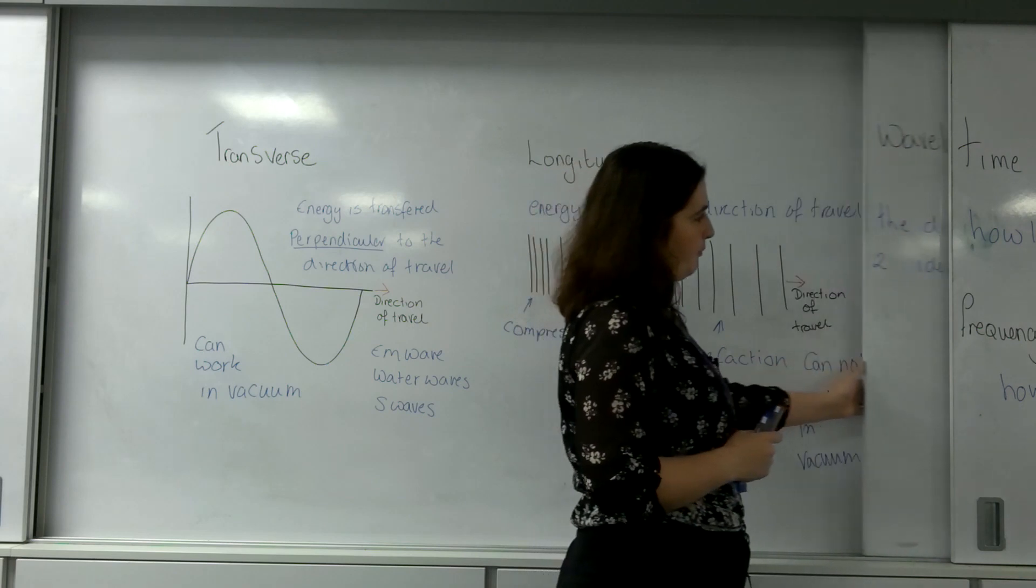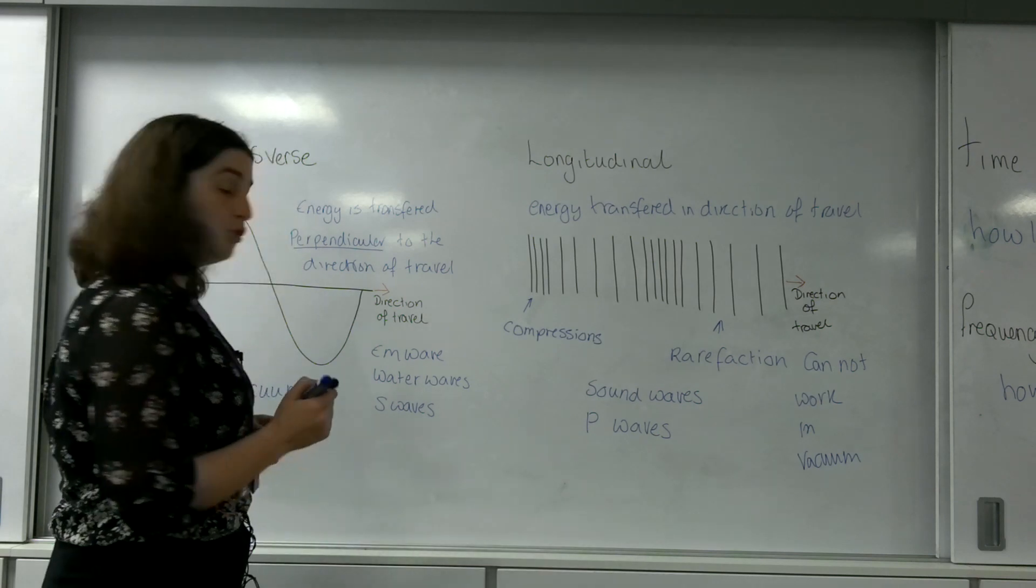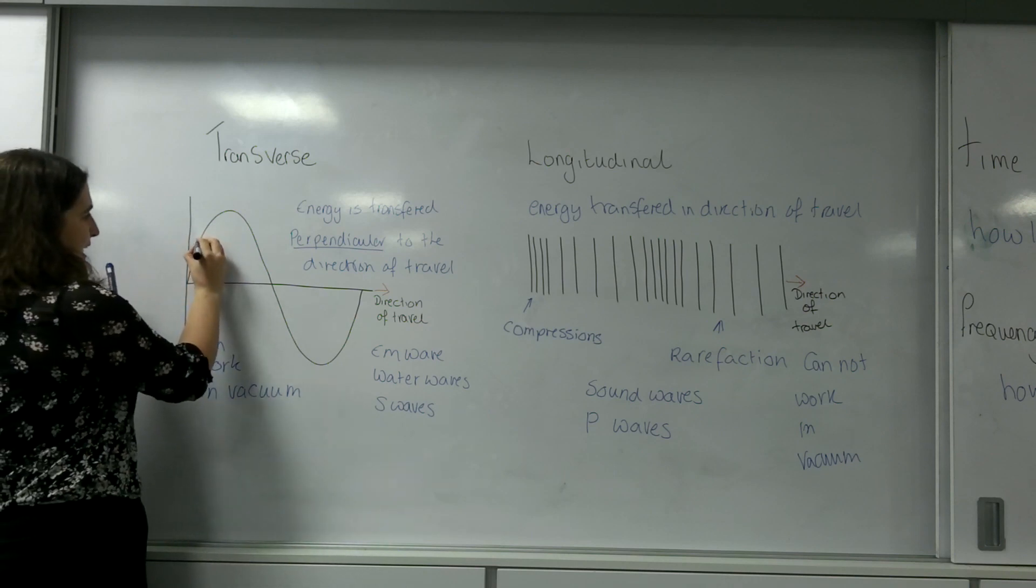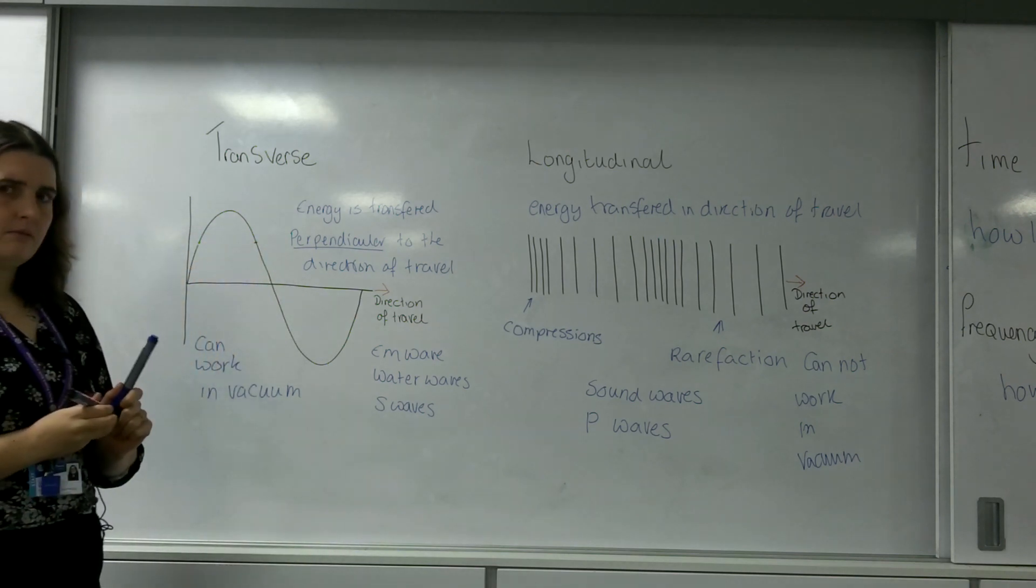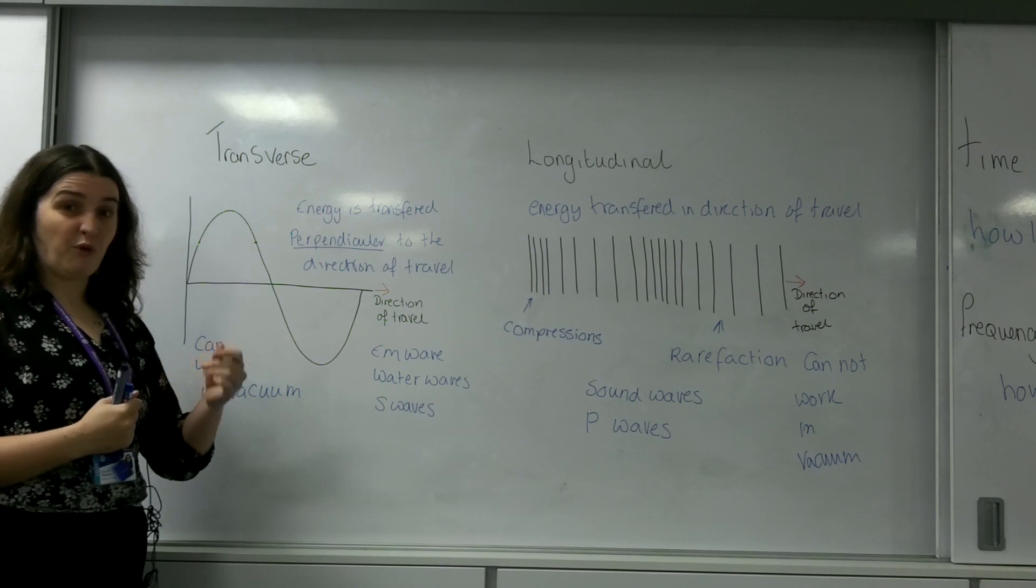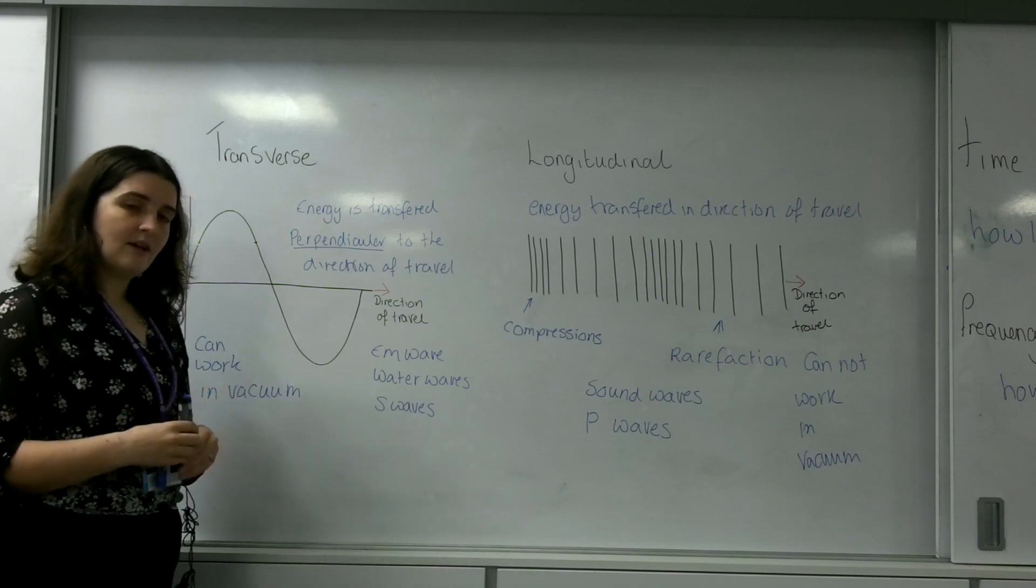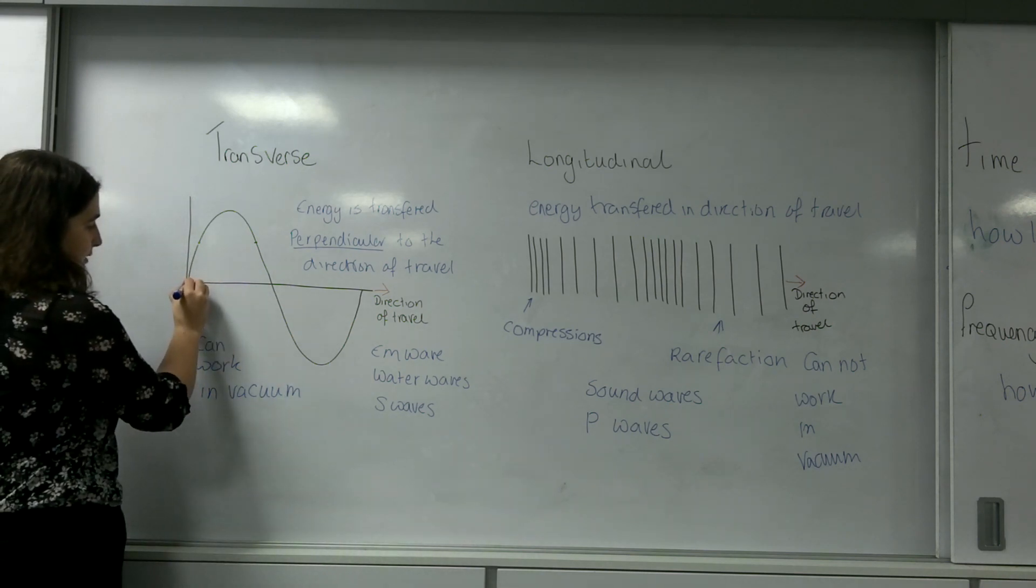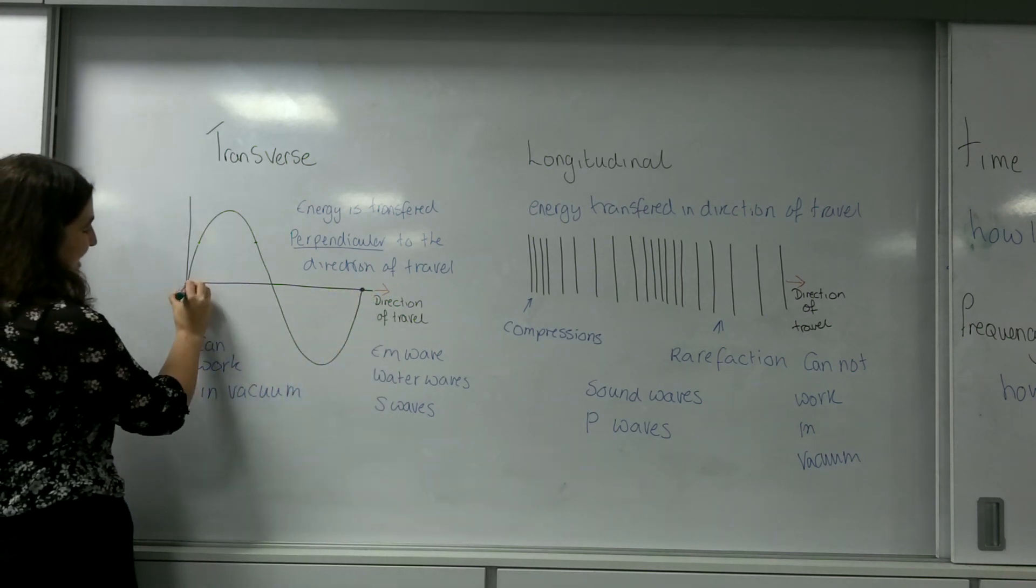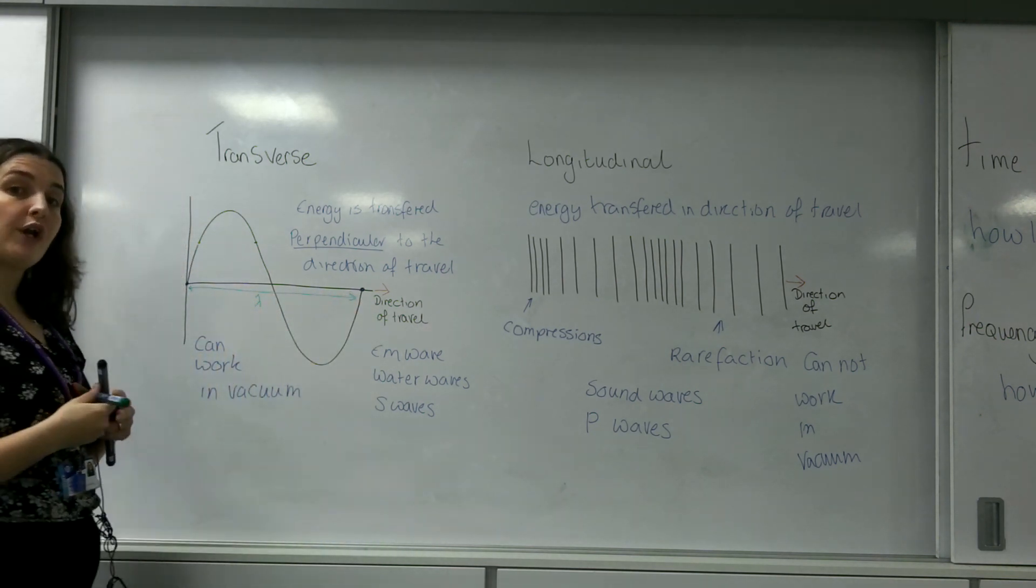If we look at a transverse wave, two identical parts of the wave are not here and here. They are not identical even though they are the same value. This is because what's going to happen to that particle before and after is different. The only position here that is the identical point is from here to here, and it is this distance here which would be one wave.